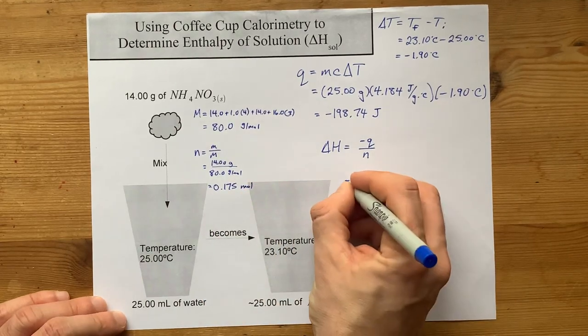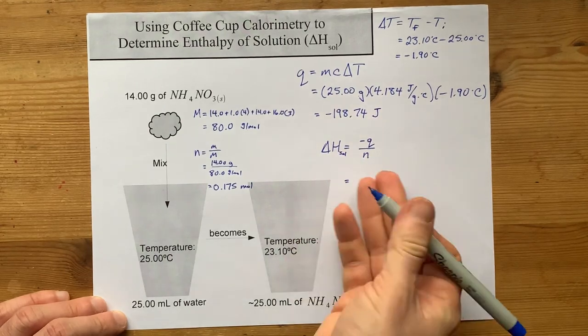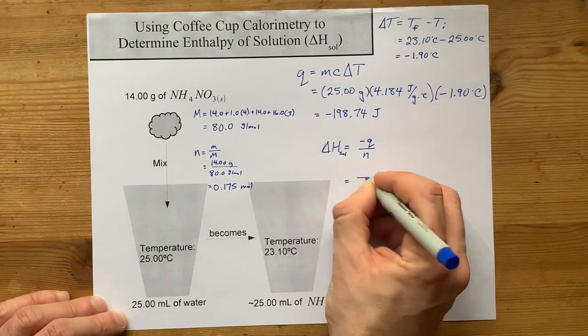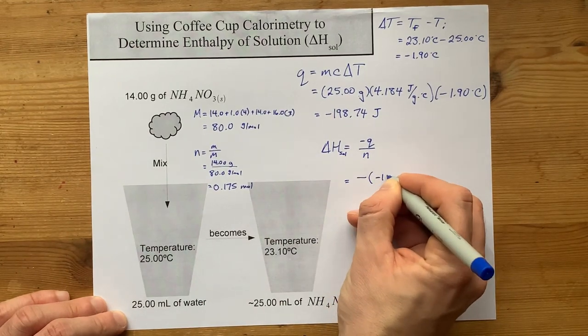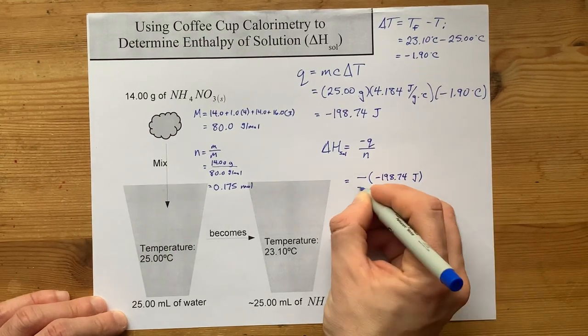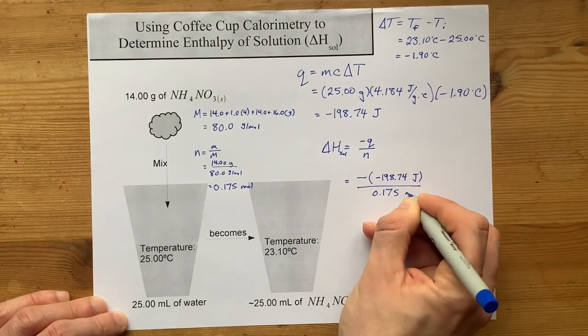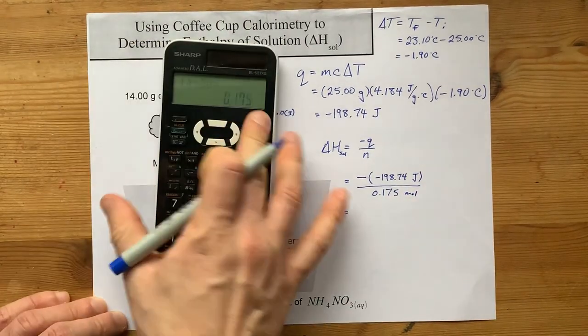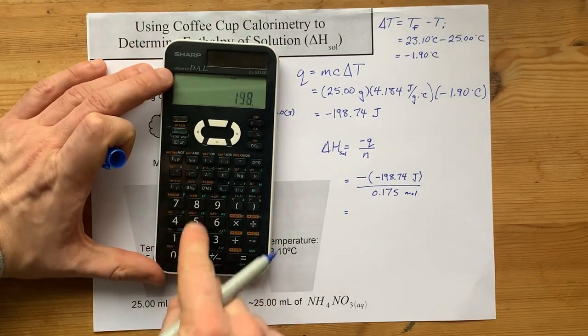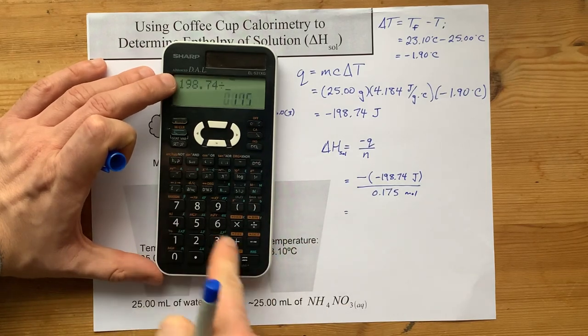Delta H for the reaction here, which is the dissolving, or enthalpy of solution for ammonium nitrate, is negative Q, and Q itself is already negative. So that's going to be negative negative. It'll become positive, and I'm going to divide it by the number of moles. Let's do that on the calculator. I got negative negative 198.74. It is positive. Look at that. Divided by 0.175. That's 1135.66, and the units are joules per mole.